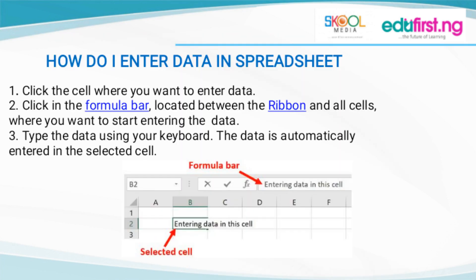So how do you enter data on the spreadsheet? It's very simple. You click on the cell you want to enter data into. After clicking the cell, if you need a formula, you click on the formula bar. If you don't need any formula, you just type the data using your keyboard. The data is automatically entered in the selected cell. I have an illustration there to guide you as well.